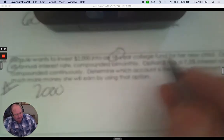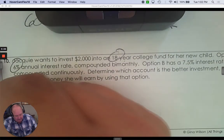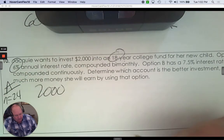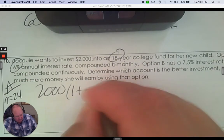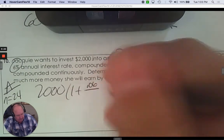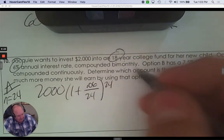So if it's bi-monthly, twice a month, that means it's 24 times a year. And the interest rate is 6%. So this is going to be the formula for compounded bi-monthly. And it's 18.